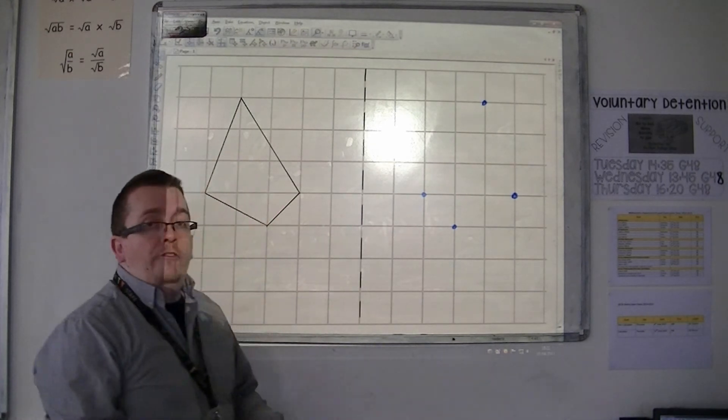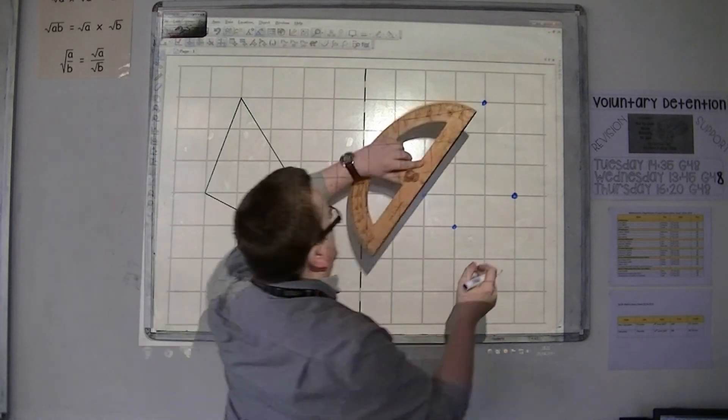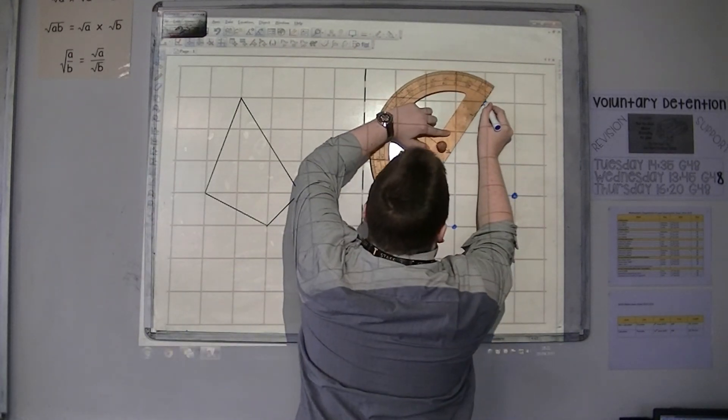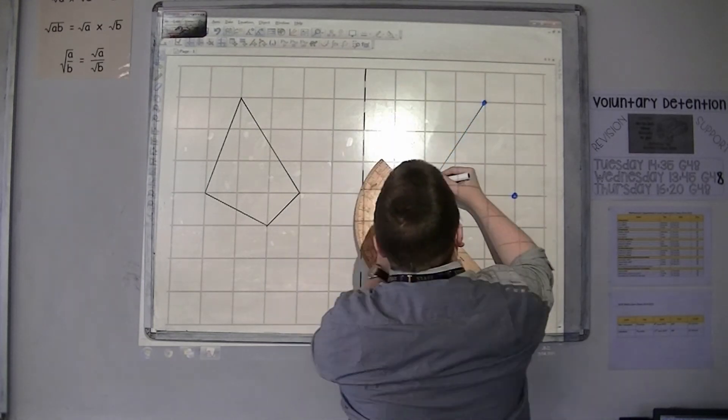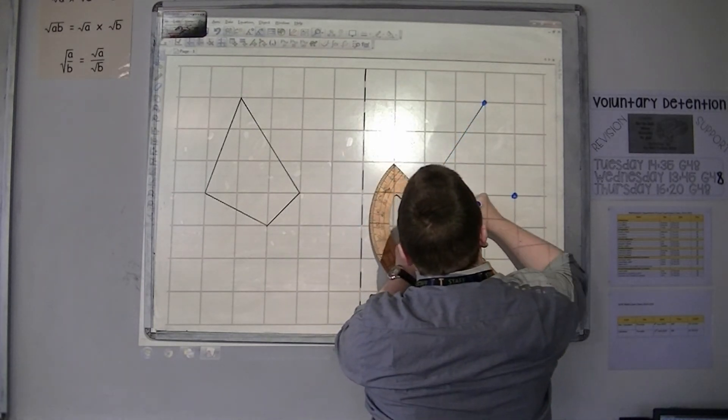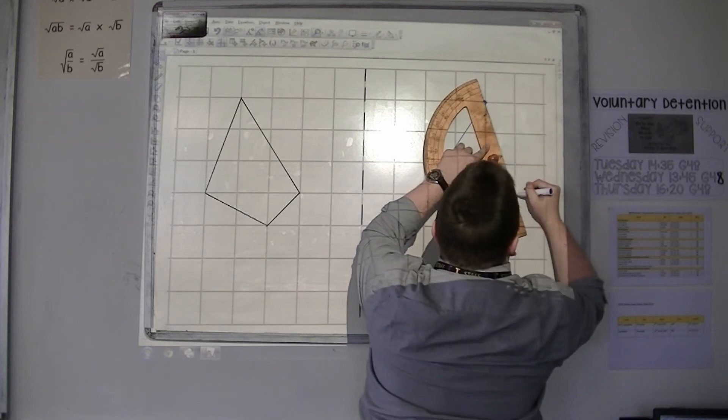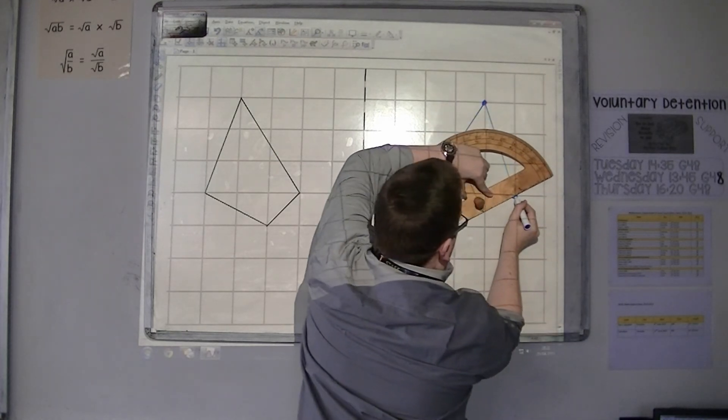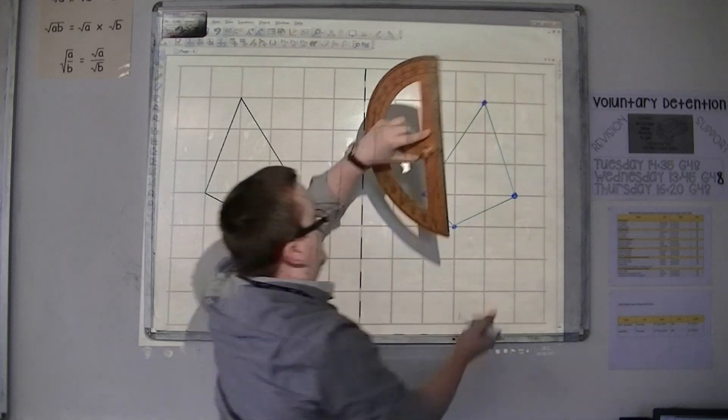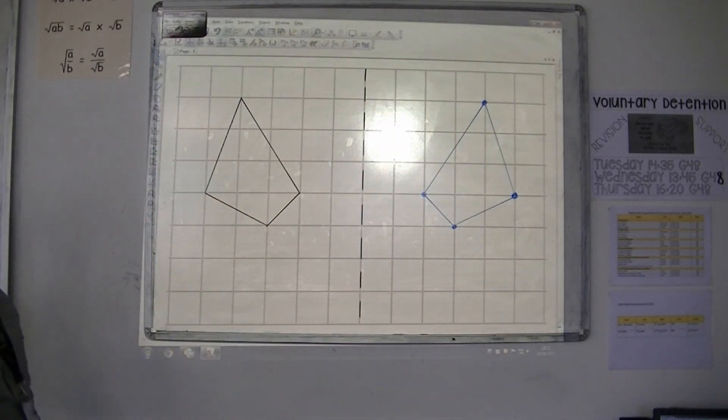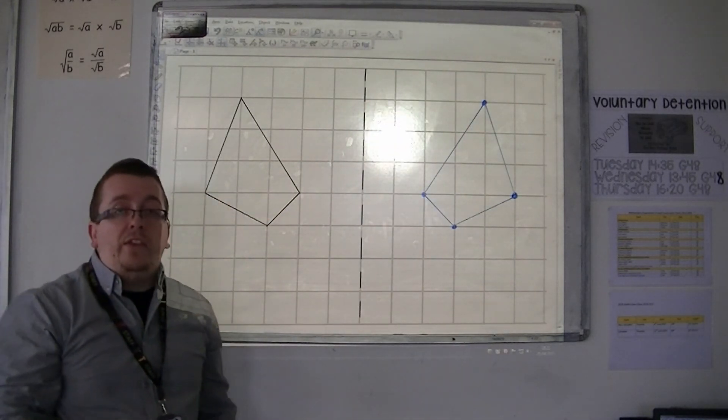Once you've done that for all of the points, you can then join those points together, and you'll find that you have the reflected shape, as required. Okay? And it's as easy as that.